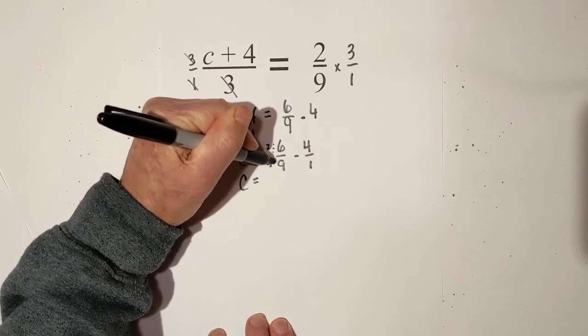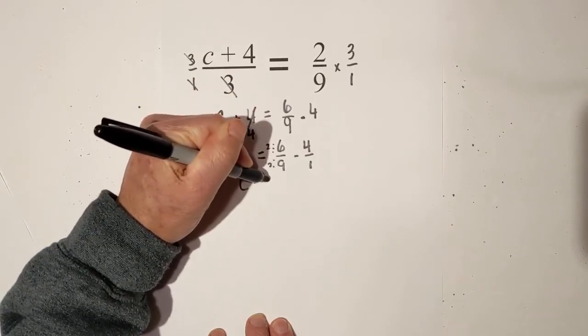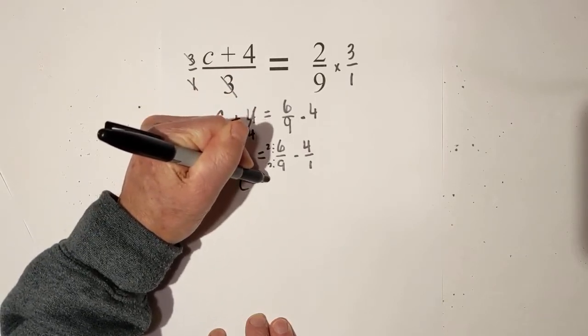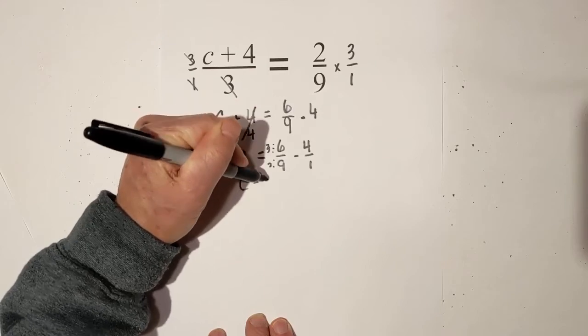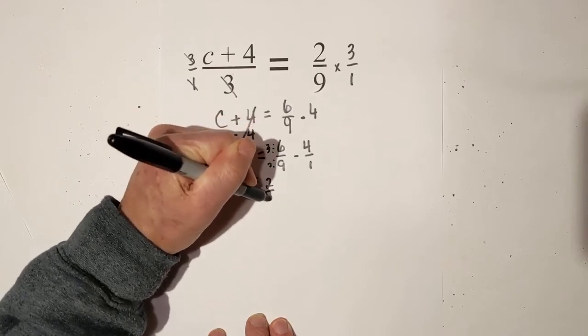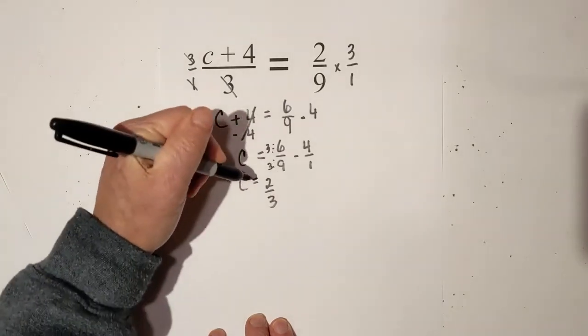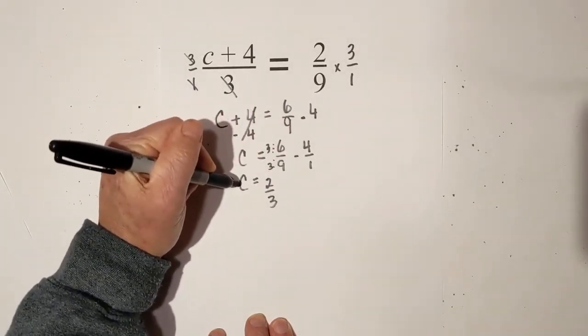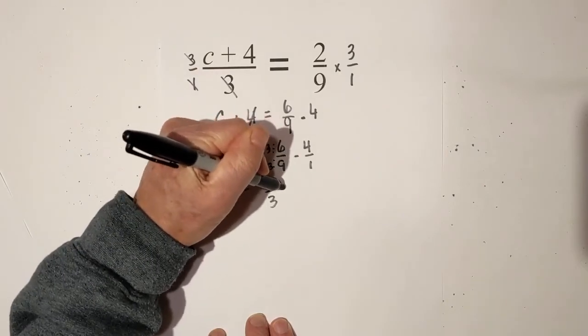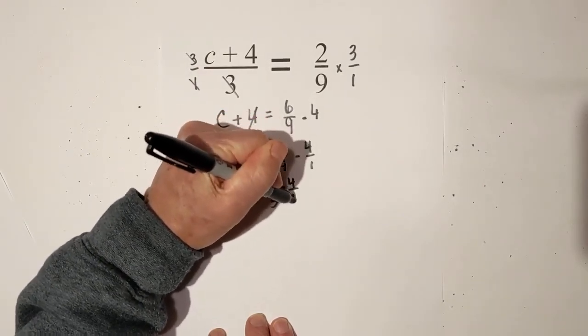If I divide it by three, then that can become two-thirds. So let's divide it by three, not two. And then so now we have c is equal to two-thirds minus four over one. Well, the common denominator is three, so I'm going to multiply everything by three. Two-thirds don't have to multiply anything there, minus four times three is twelve, one times three is three.